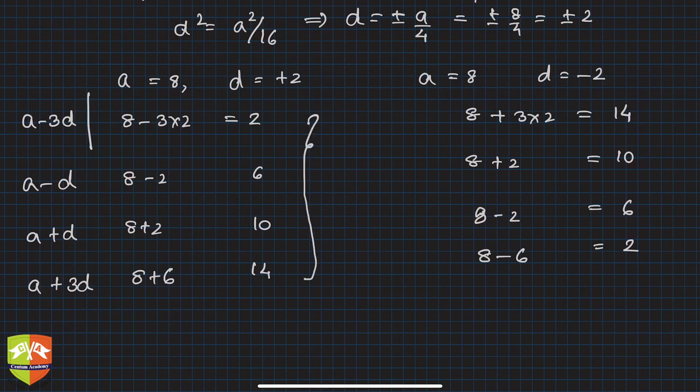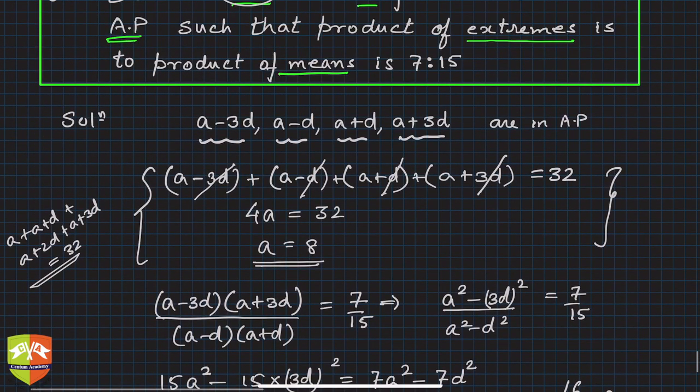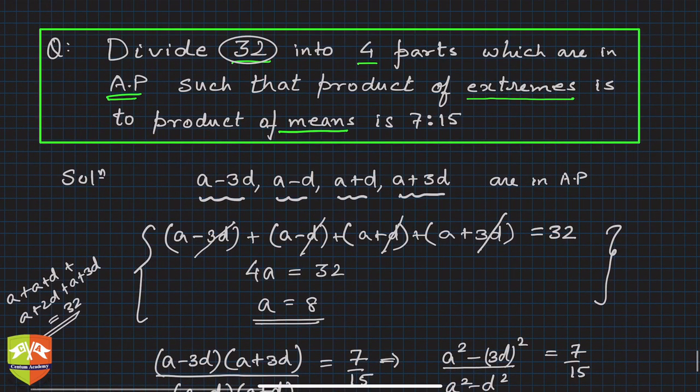In both cases, these are ascending and descending order - the terms are 2, 6, 10, 14 or 14, 10, 6, 2. Both add up to 32, and you can check the product of extremes (2 times 14) to product of means (6 times 10) is 7 upon 15. Both conditions are met, and the four numbers in AP are either 2, 6, 10, 14 or 14, 10, 6, 2.